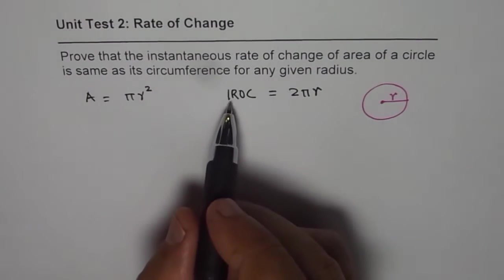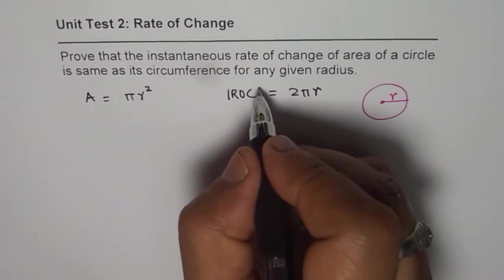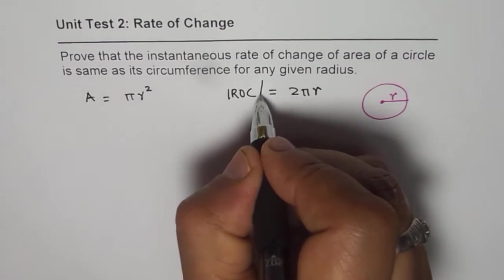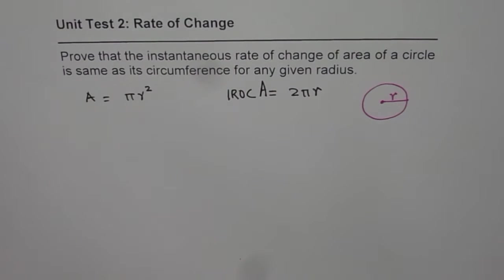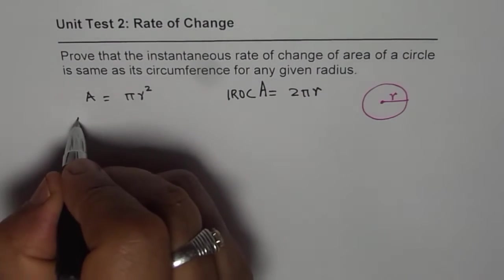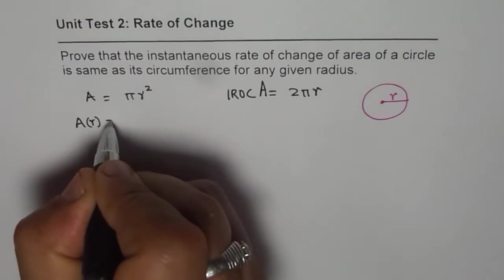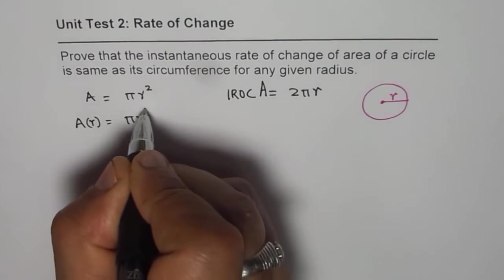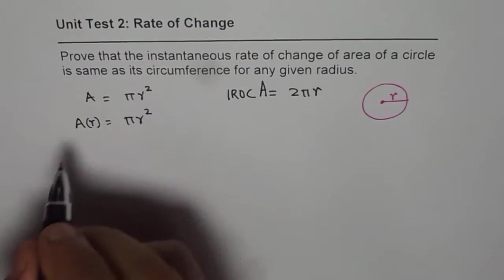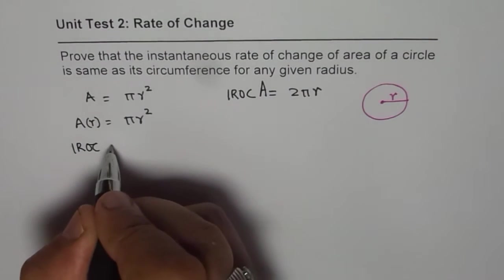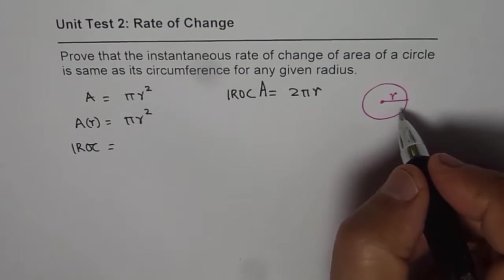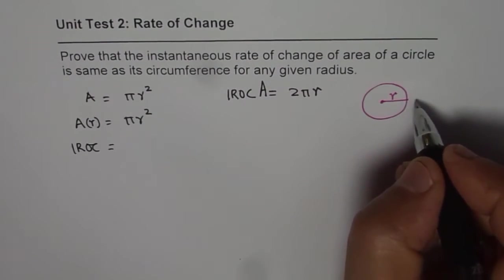That instantaneous rate of change for area is 2 pi r. That is what we are trying to prove. So let us see how we can prove it. So we know area as a function of radius is pi r square. So let us find the instantaneous rate of change with respect to the radius. So let us consider a small increase in radius.